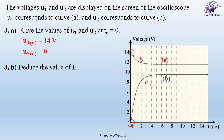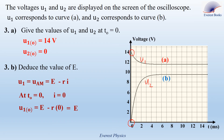Part 3B: deduce the value of E. We proved that U1 equals UAM equals E minus rI. At time 0, I equals 0, so U1(0) equals E minus r times 0, which equals E. Since U1(0) equals 14 volts from the graph, therefore E equals 14 volts.